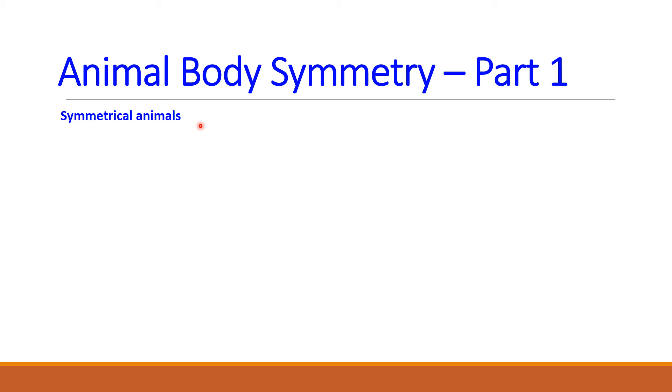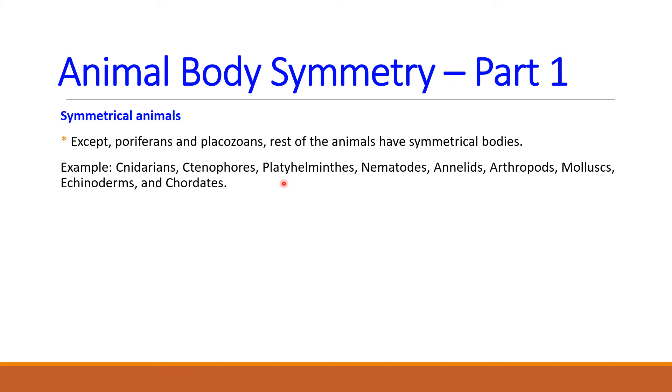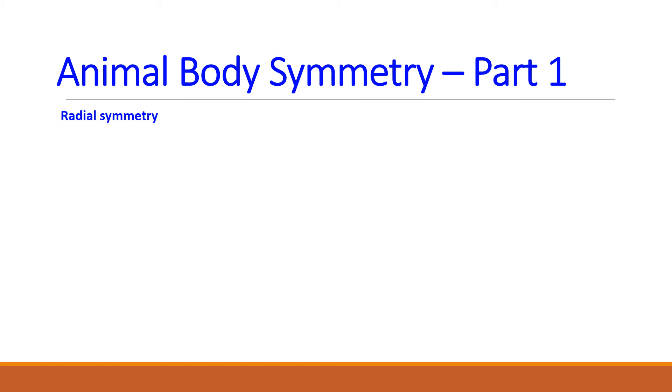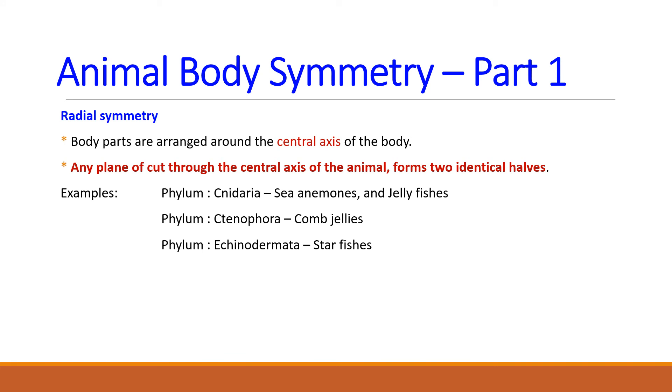Except asymmetrical poriferans and placozoans, rest of the animals have symmetrical bodies. These animals either have radial symmetry or bilateral symmetry. Let's take radial symmetry. The appendages of these animals are arranged around the central axis of the body. As such, any plane that cut through the central axis of the animal form two mirror images. The examples for the radial symmetrical animals are cnidarians like sea anemone and jellyfishes or ctenophores like comb jellies and echinoderms like starfish.